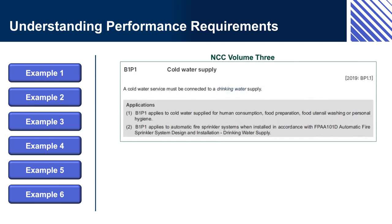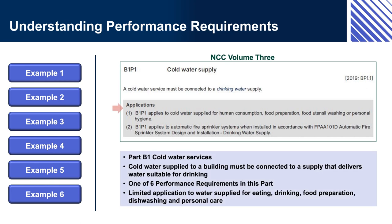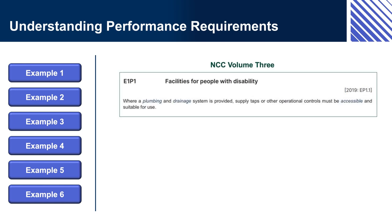Example 5 — NCC Volume 3, B1P1: Cold Water Supply. Section B Water Services, Part B1 Cold Water Services requires that cold water supplied to a building must be connected to a supply that delivers water suitable for drinking. This is limited — it applies to water supplied for eating, drinking, food preparation, dishwashing and personal care. So, for example, the water supply for flushing toilets or for an evaporative cooler does not need to be from a drinking water supply, because this water is not intended for any of those uses.